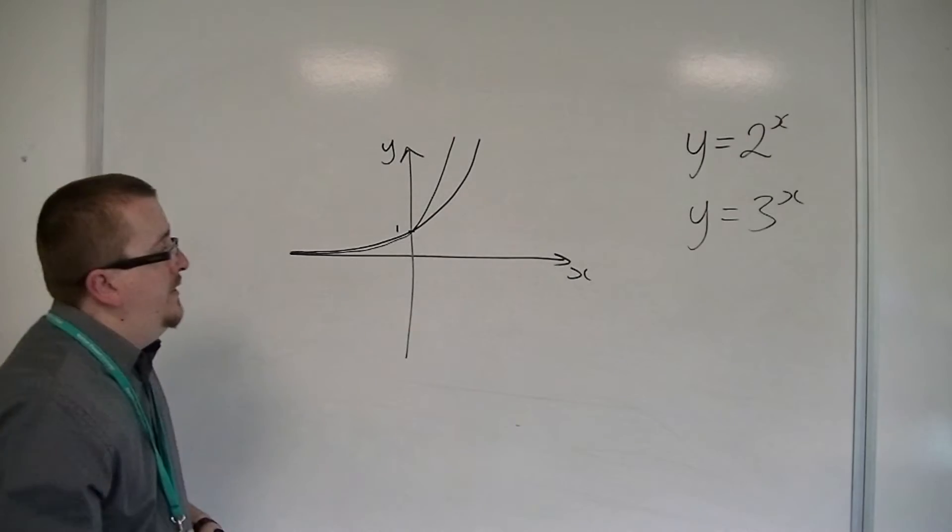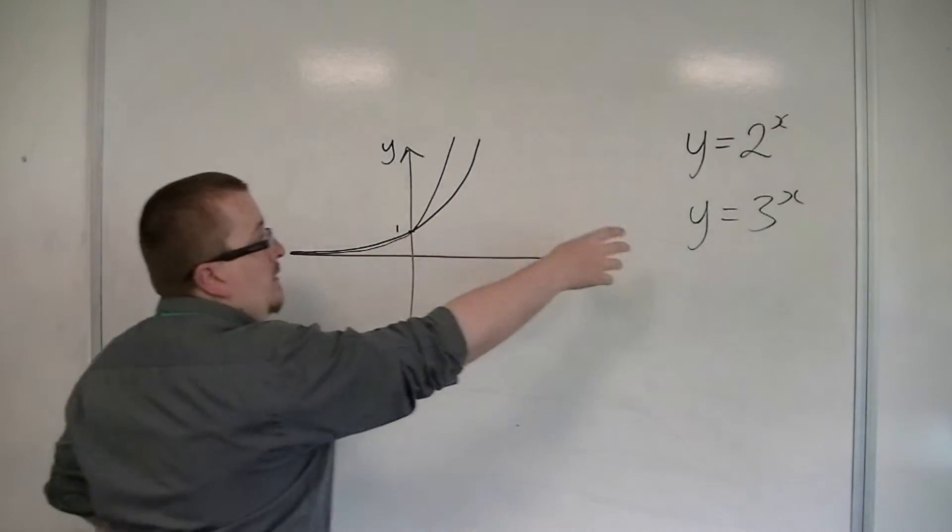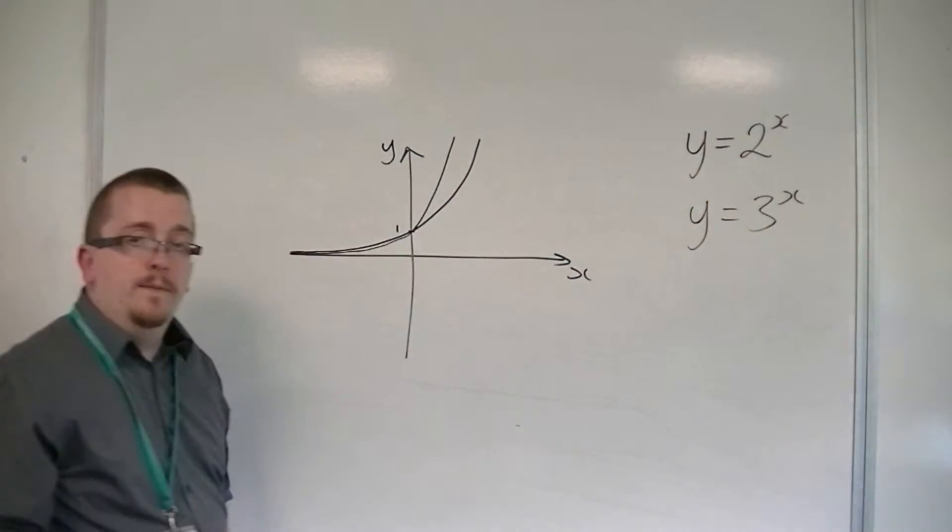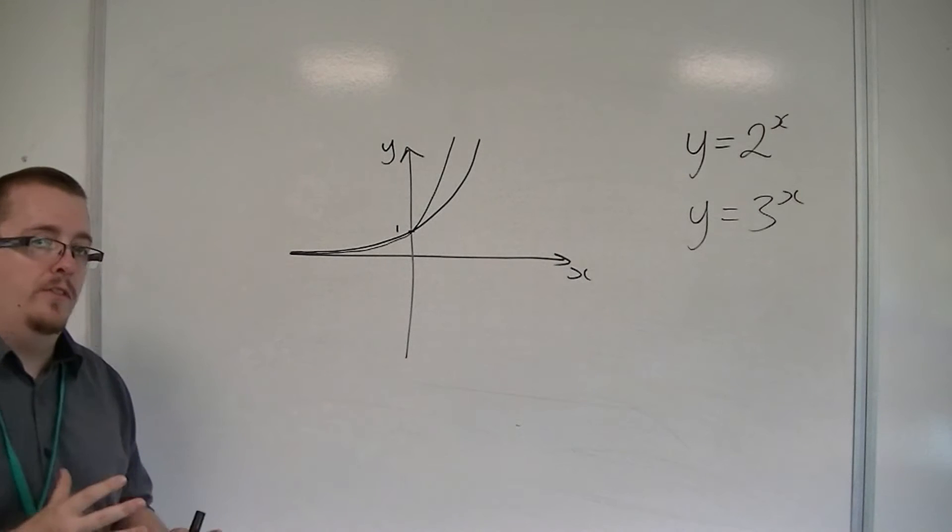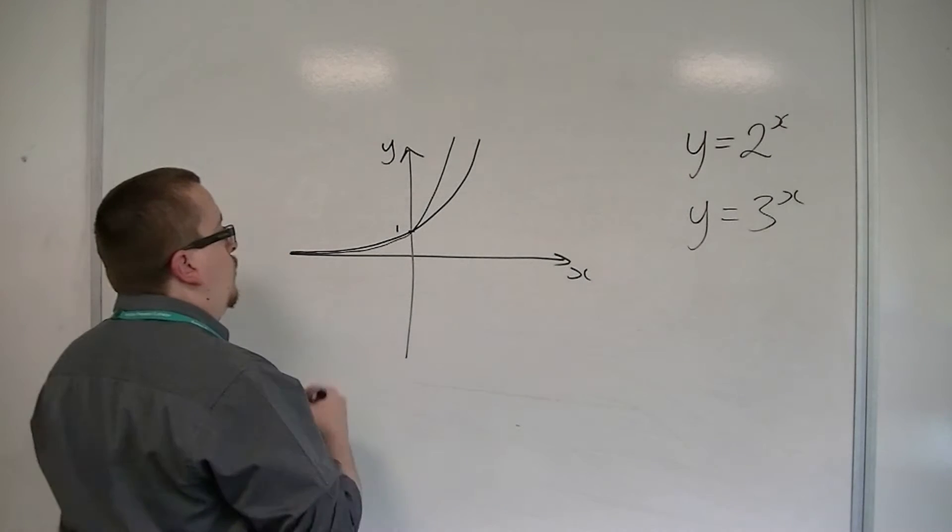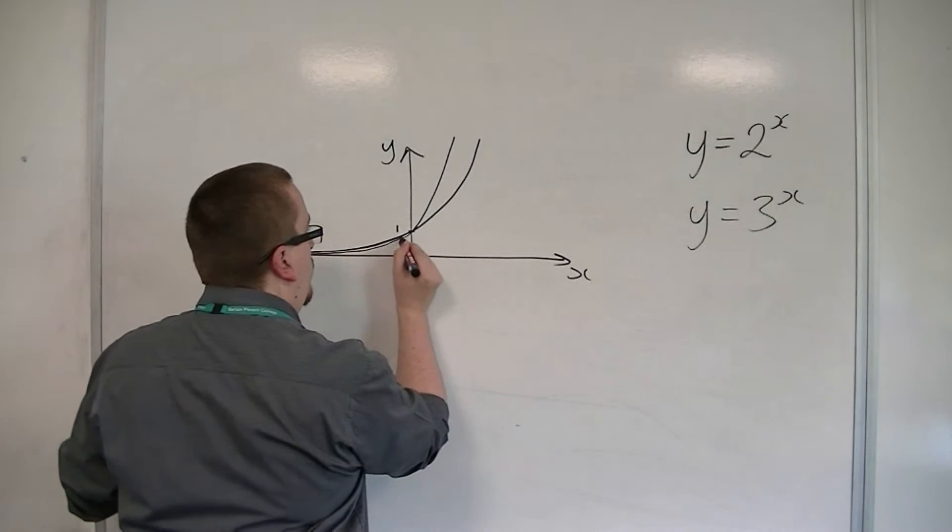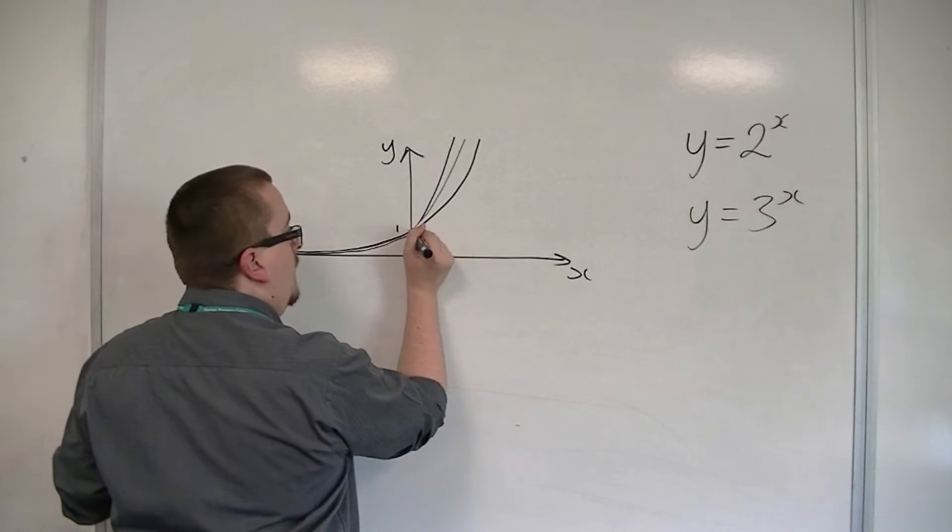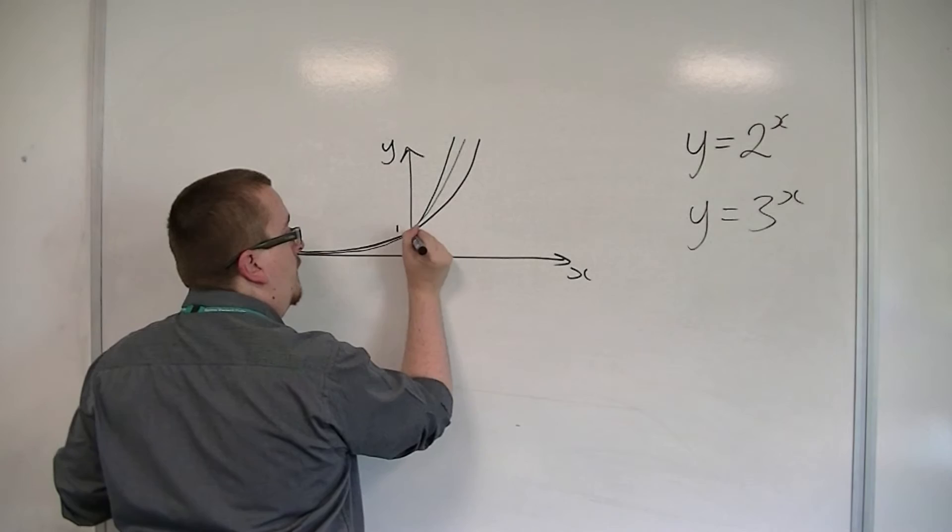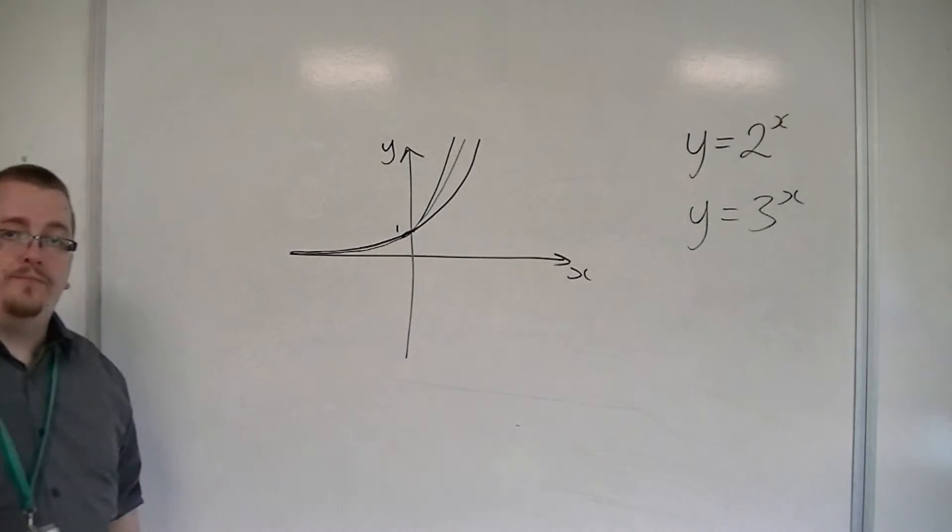At some point between 2 and 3, we get a curve so that when I draw it, the gradient at (0, 1) is 1.